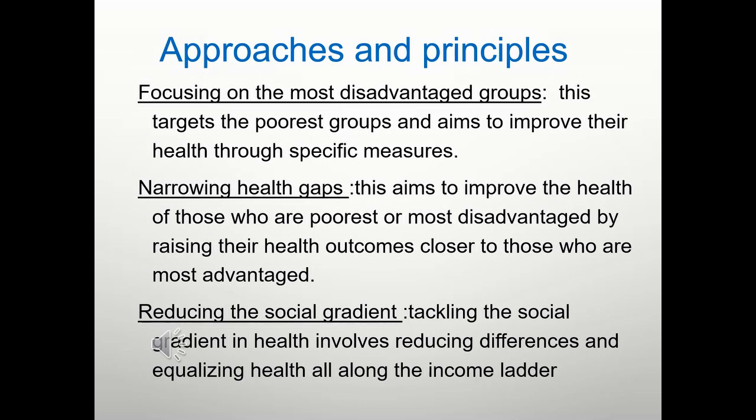Social scientists have proposed three approaches. One of them is to focus intentionally on the most disadvantaged groups in society, targeting them to try and improve their health opportunities. Secondly, to narrow the gaps between the top and the bottom. And thirdly, to reduce the social gradient — looking at the differences in society and trying to equalise them along the various levels of the income ladder.